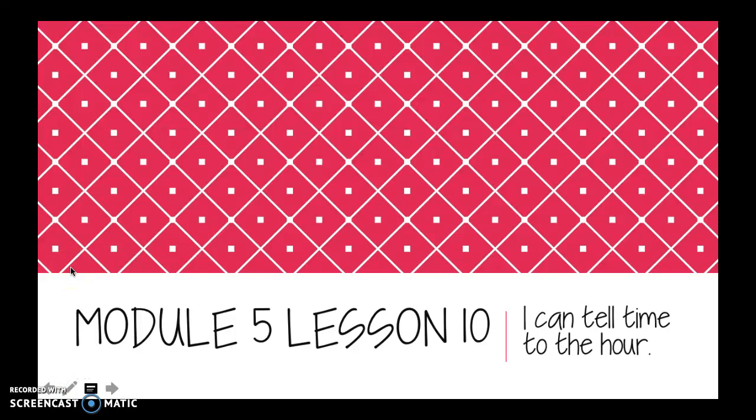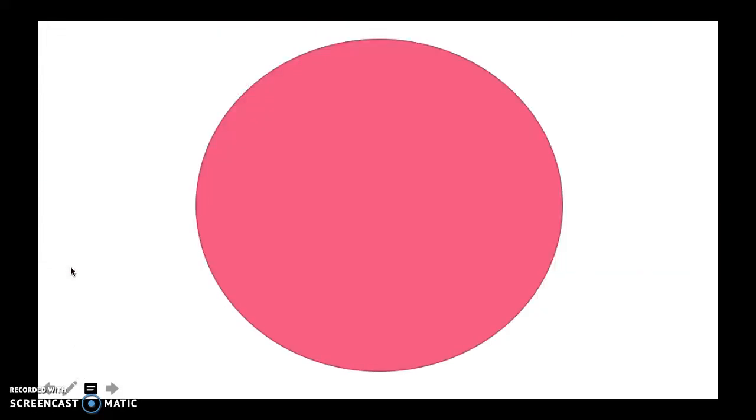Hi friends, this lesson is for module 5, lesson 10. Last night I went a little wild. Wait till you see what I did. Well, I know that we've been dividing up shapes. And I had this perfectly whole pink circle. And I was like, man, I wonder what happened if I would just divide it into halves. And I was like, ooh, I like having two equal parts. What if I divided it again?